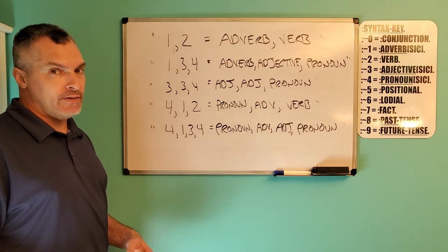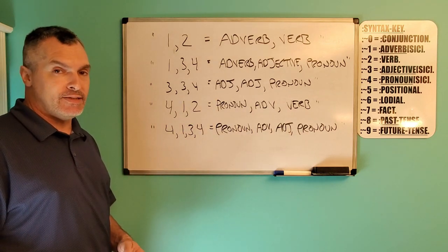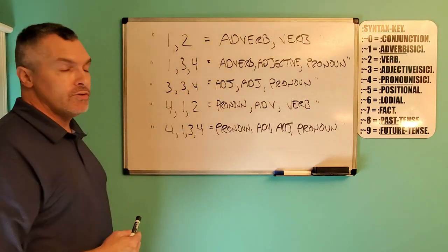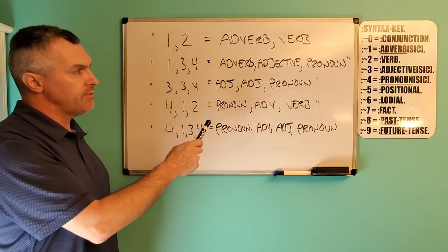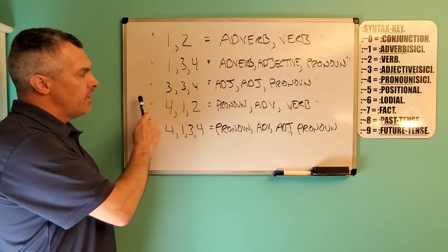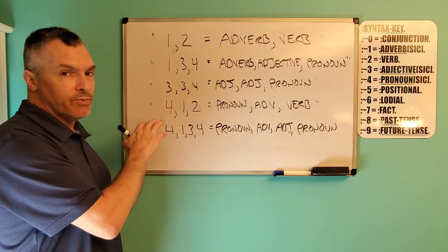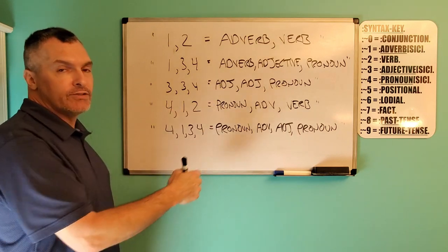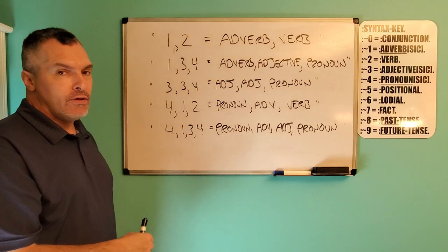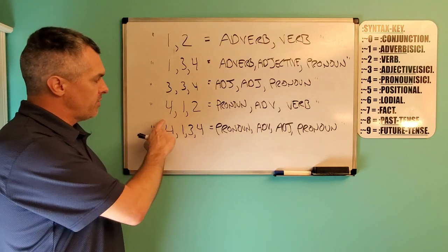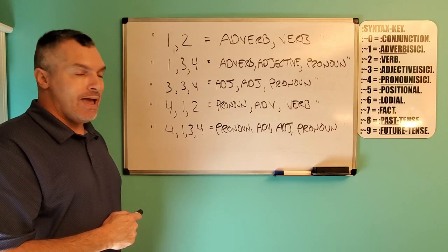As you saw in the previous screenshot from colon David Eiffel-Wing colon Miller's seminar, there are five basic syntax scenarios. You have the 1-2, which is adverb, verb. You have 1-3-4, which is adverb, adjective, pronoun. Then 3-3-4, which is adjective, adjective, pronoun — and if you have a procession of tangible contract words, each tangible fact-based word is going to be a 3-3-3-3-3 and then the final one is a 4, no matter how many there are. Then you have a 4-1-2, which is pronoun, adverb, verb. And then a 4-1-3-4, which is pronoun, adverb, adjective, pronoun.